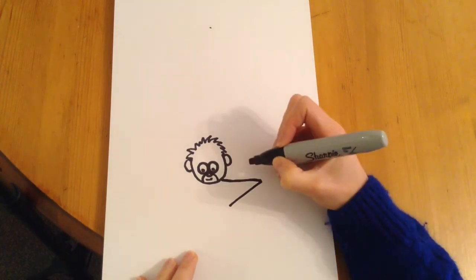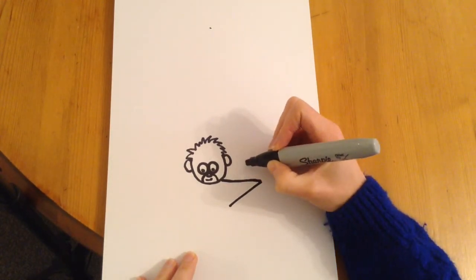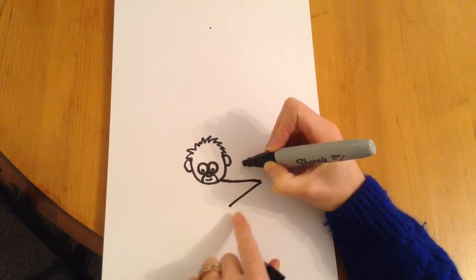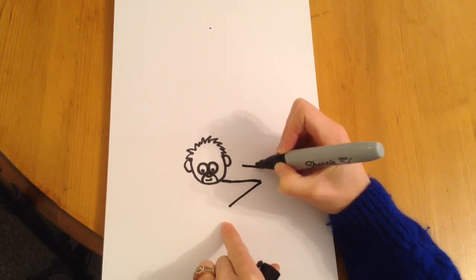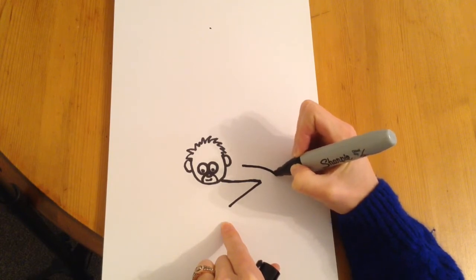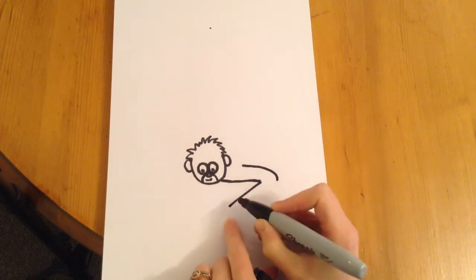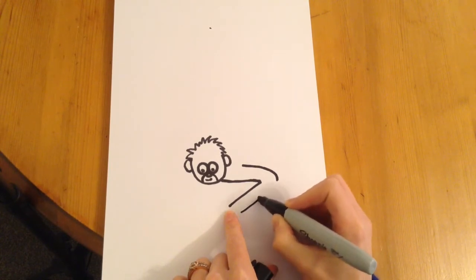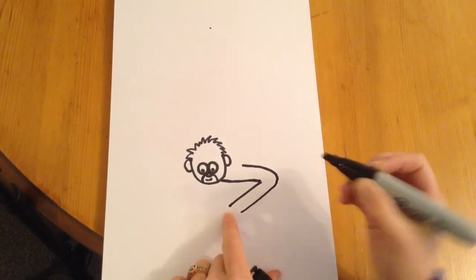So we're going to start just to the right of the head and we're going to do another line that's parallel to this line. So that's parallel to that. Now make it curve round like so. We'll do another line that's parallel to this line, another line like that. So that's his arm.